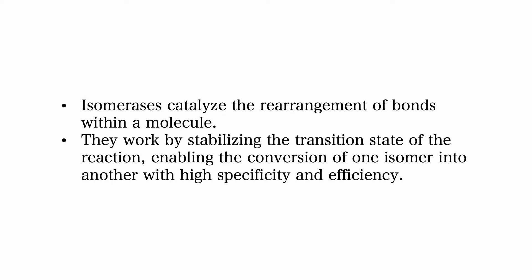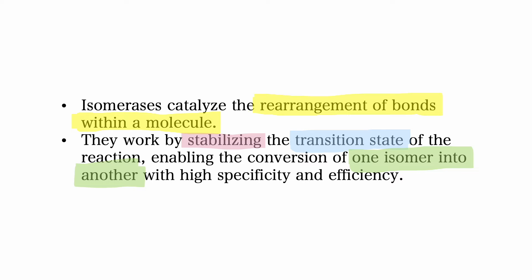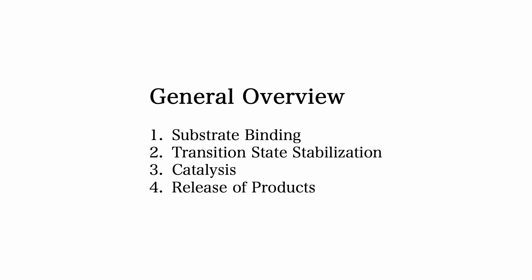Now let's get back to isomerase enzymes. Isomerase enzymes catalyze the rearrangement of bonds within a molecule. They work by stabilizing the transition state of the reaction, enabling the conversion of one isomer into another. Here's a general overview of how isomerases work.